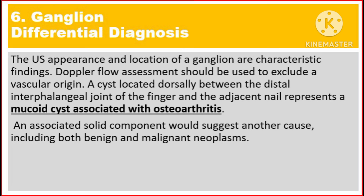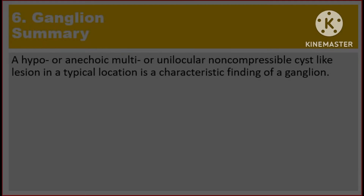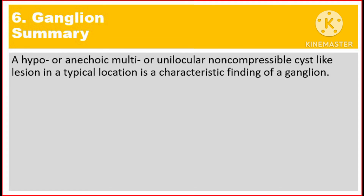An associated solid component would suggest another cause, including both benign and malignant neoplasms. Summary: A hypo- or anechoic, multi- or unilocular, non-compressible cyst-like lesion in a typical location is a characteristic finding of a ganglion.